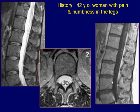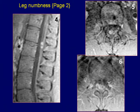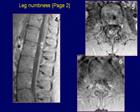The sagittal T1-weighted image demonstrates the conus abnormality as a subtle iso-intense lesion. Sagittal post-contrast T1-weighted image reveals enhancing nodules at the conus, and abnormal enhancement of the surface of the cord and nerve roots is also seen. Axial post-contrast fat-saturated T1-weighted images confirm the abnormal enhancement of the conus and the nerve roots.